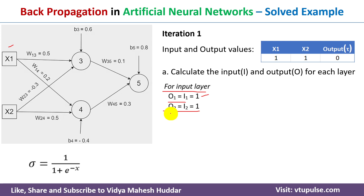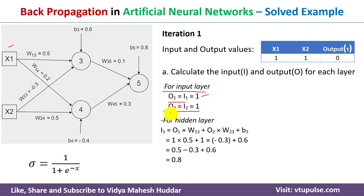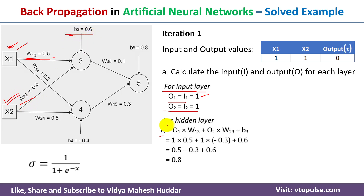Next we find the input and output for the hidden layer. For neuron 3, we calculate i3 as: (output at x1 × w13) + (output at x2 × w23) + bias b3. Substituting all values we get i3 = 0.8. The next step is to find the output at neuron 3 using the sigmoid function.